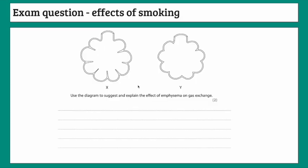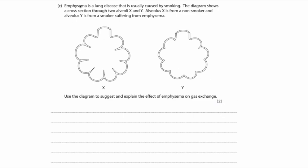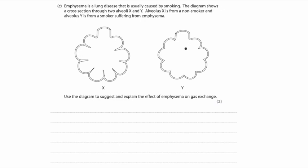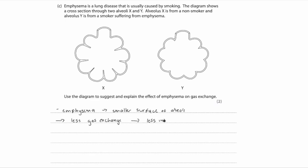Let's do some exam questions. This is a one-marker. The question reads: emphysema is a lung disease usually caused by smoking. The diagram shows a cross-section through two alveoli X and Y — one from a non-smoker and one from a smoker with emphysema. Using the diagram, suggest and explain the effect of emphysema on gas exchange. The smoker's alveolus is much larger in shape, indicating a non-smoker's alveoli have a far bigger surface area. We can talk about how emphysema causes a smaller surface area of the alveoli, causing less gas exchange and therefore less intake of oxygen.